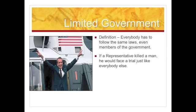In a monarchy, we have people like the king and nobles who are more powerful than everybody else. However, in our government, all politicians are held to the same laws as everybody else — this is called limited government. It means that everybody has to follow the same laws, even members of the government. If a representative commits a crime, they're going to face a jury trial just like anybody else in the United States. They have no special powers protecting them, as a king would have in England.